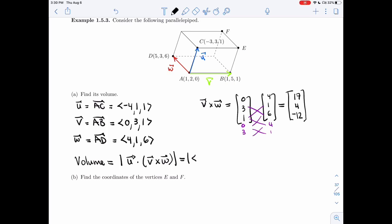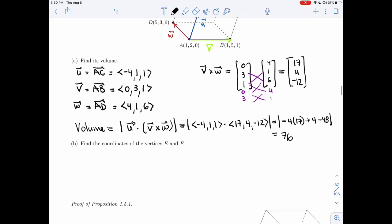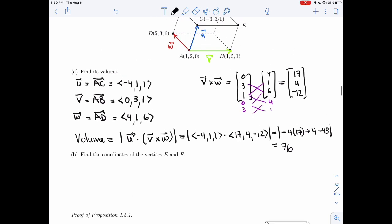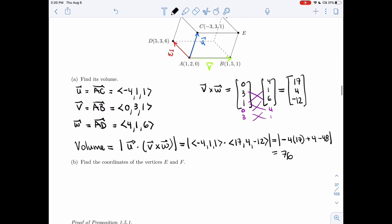Alright, so this is minus 4, 1, 1 dotted with 17, 4, minus 12. And so I get minus 4 times 17 plus 4 minus 48, and I got minus 76. So that's just 76. Alright, so the volume of this parallelepiped is 76.